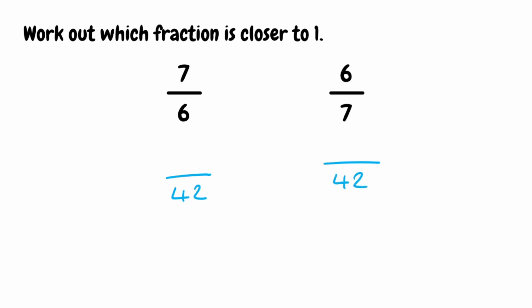To get from 6 to 42 we must have multiplied by 7, which means we do the same to the numerator. 7 multiplied by 7 gives us 49. For the second fraction, to get from 7 to 42 we must have multiplied by 6, so we do the same to the top. 6 multiplied by 6 gives us 36.